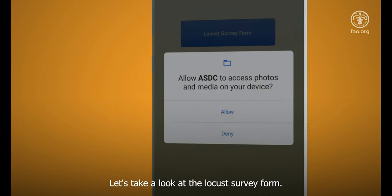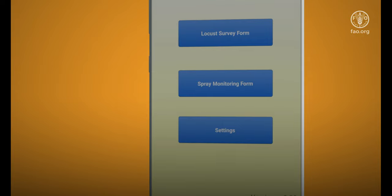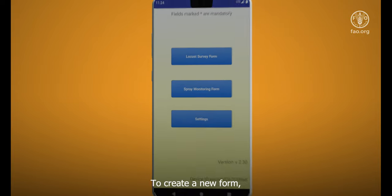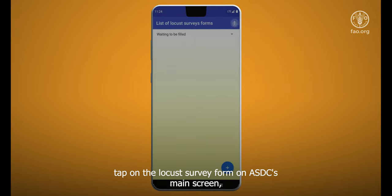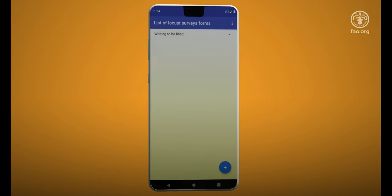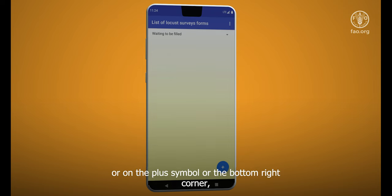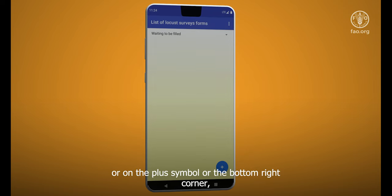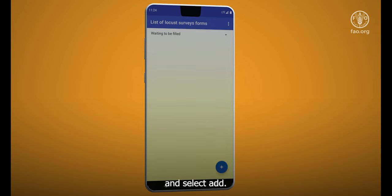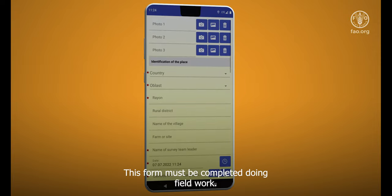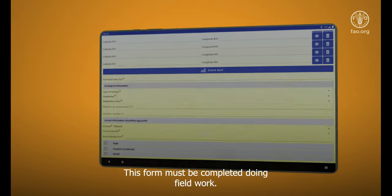Let's take a look at the LOCUS survey form. To create a new form, tap on the LOCUS survey form on ASDC's main screen. Now press on the three dots on the top right corner or the plus symbol on the bottom right corner and select add. This form must be completed during field work.